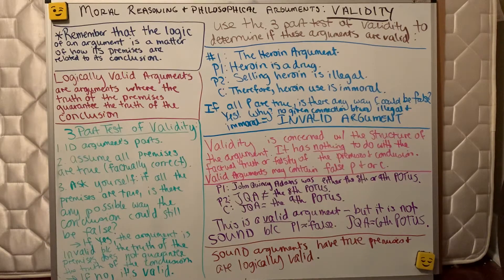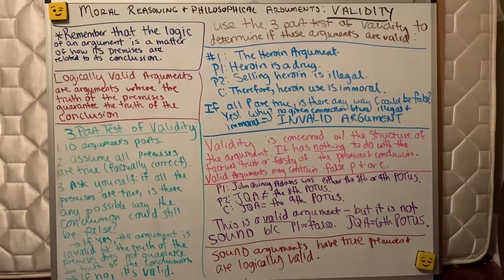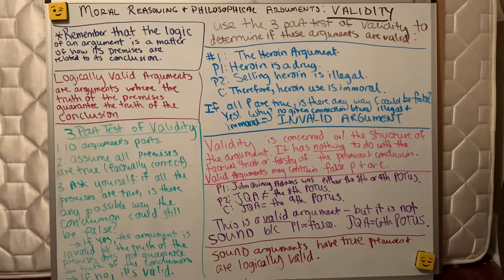The first part of the three-part test of validity: identify the parts of the argument. We saw in a previous video that there are ways to identify the conclusion — the main point being argued for — and to identify the premises, which are the reasons given for that conclusion. Then write the argument in standard argument form: Premise 1, Premise 2, draw a line, and put the conclusion underneath.